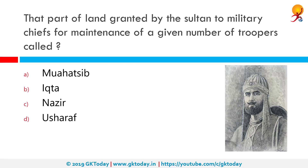That part of land granted by the Sultan to military chiefs for the maintenance of a given number of troopers was called Iqta. The Iqta system was first introduced by Iltutmish in the Delhi Sultanate. In this system, land was granted to Turkish nobles in lieu of salary. The holders of these tracts were called Walis or Muktis, and later Iqtas became provinces or Subhas.